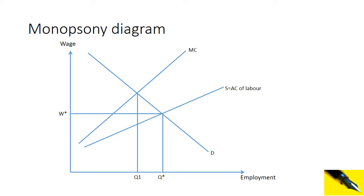For example, the NHS has by far the biggest share of buyers of labour in the health sector. Tunbridge School is the biggest employer in Tunbridge, so it has some degree of monopsony power in the local labour market. The monopsonist employs Q1 workers. What is the wage rate that the monopsonist pays? Pause the video and think about it — the monopsonist is employing Q1 workers, what wage rate does it pay?